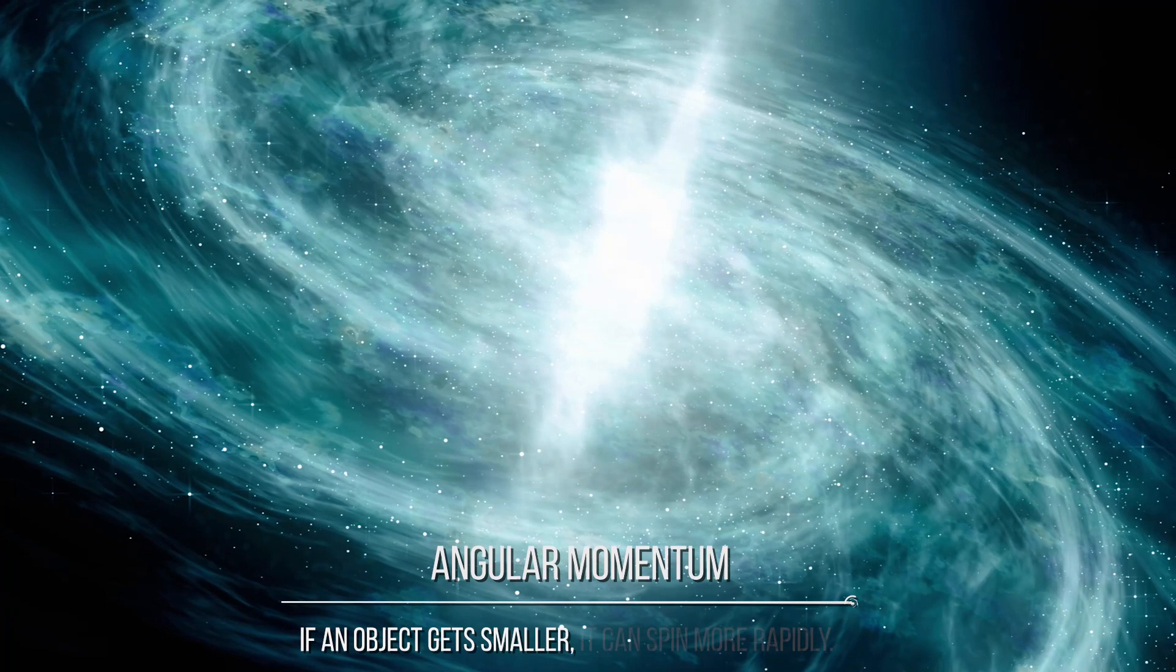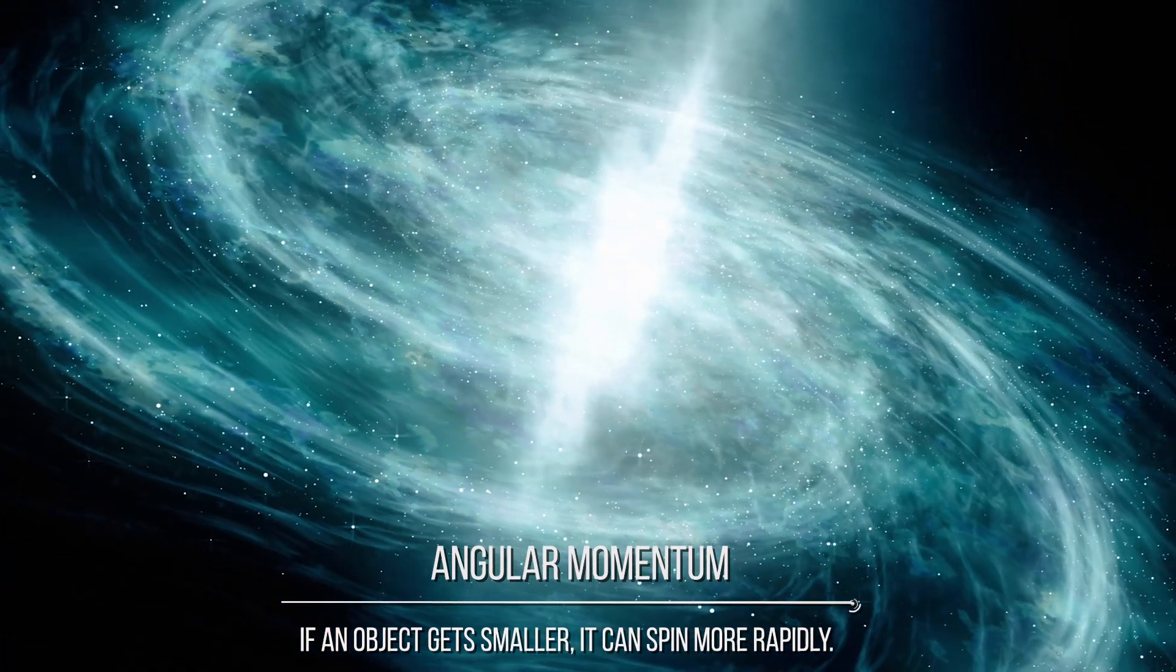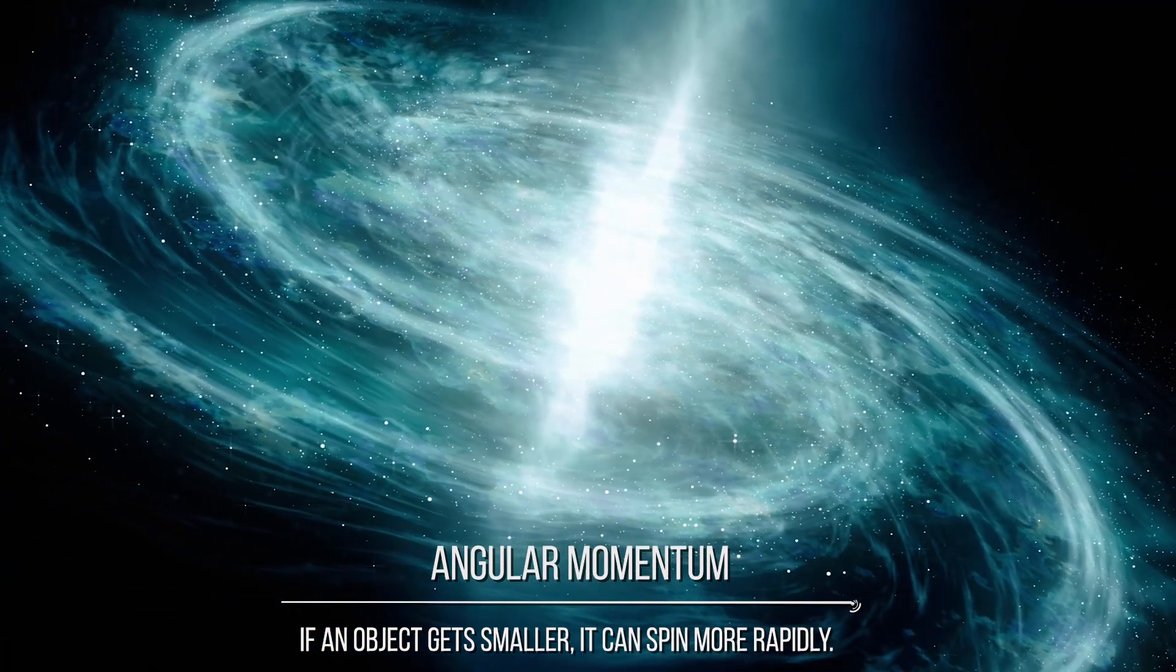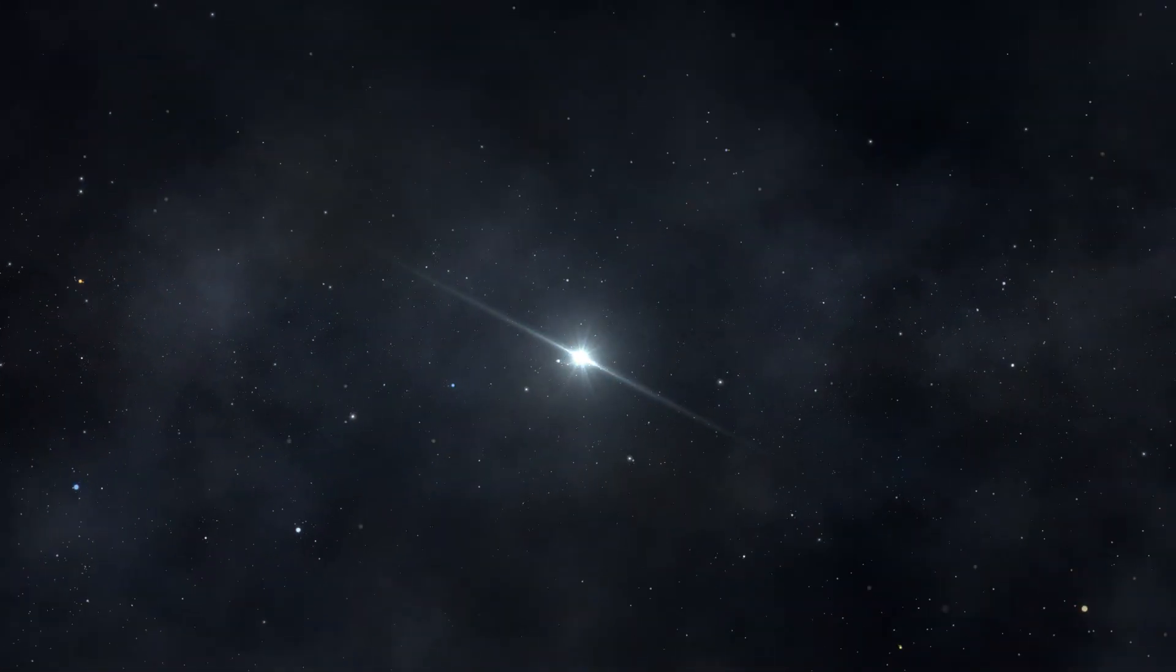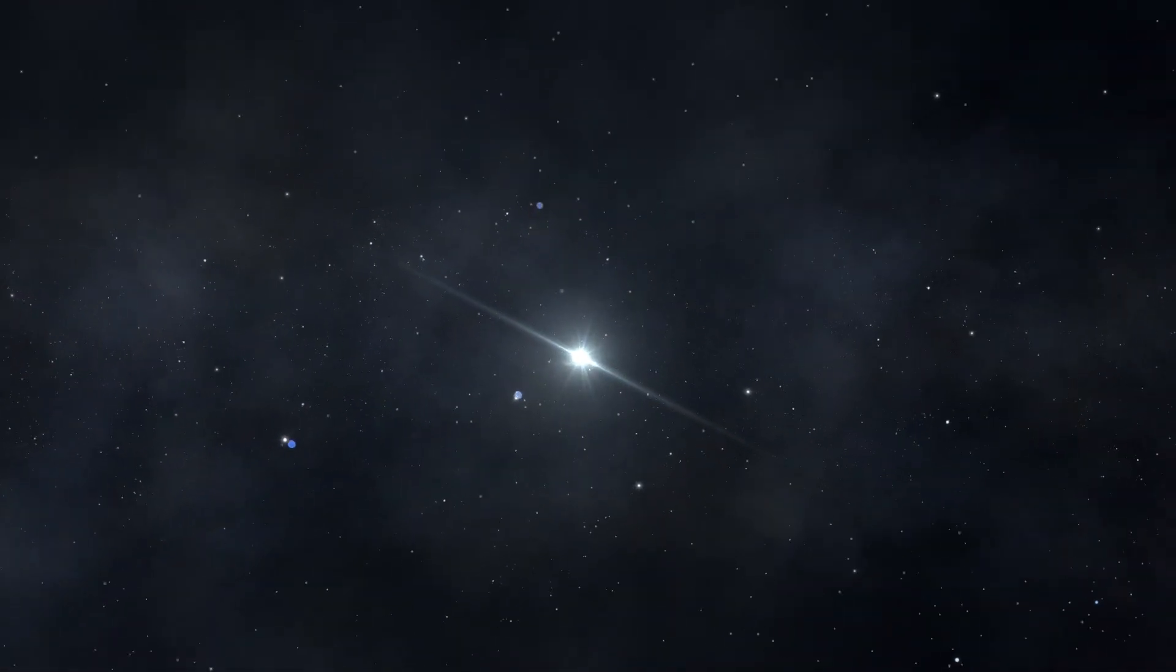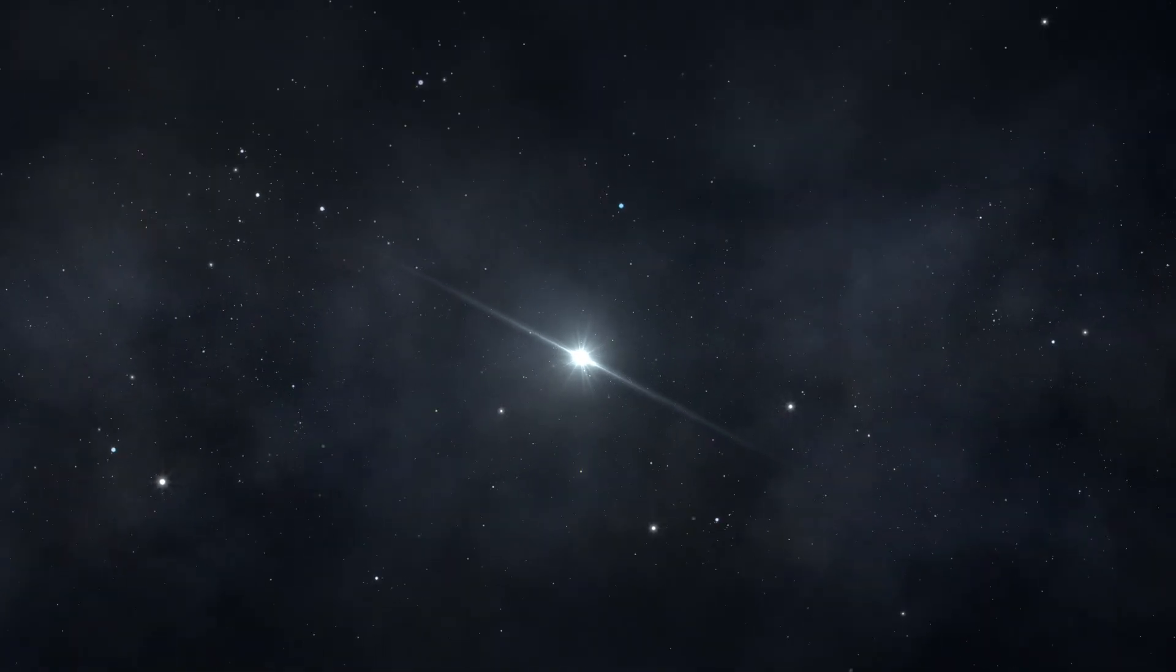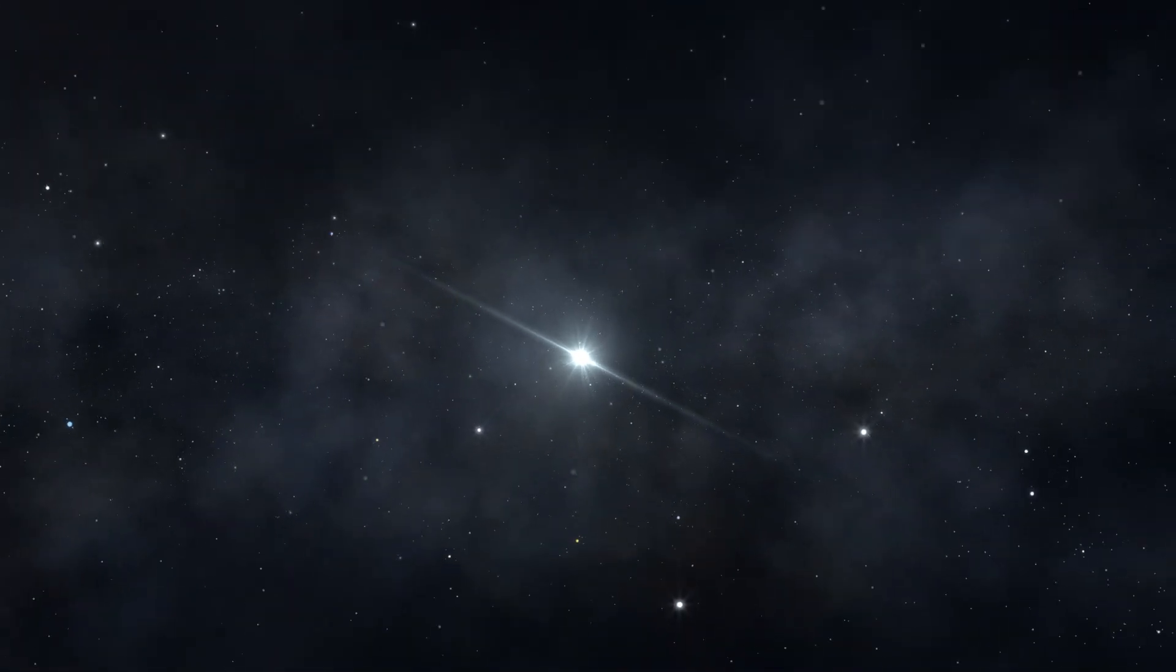In fact, we know pretty well from the conservation of angular momentum that if an object gets smaller, it can spin more rapidly. Now, considering the short period of a neutron star's pulse, astronomers concluded that such an object should have a diameter of only 10-20 km.